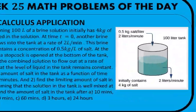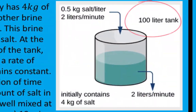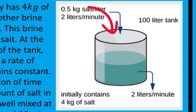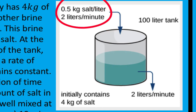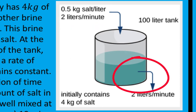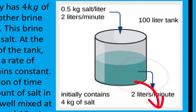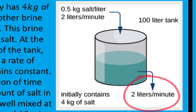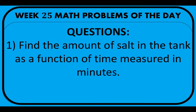Here is our problem for today. A tank containing 100 liters of a brine solution initially has 4 kilograms of salt dissolved in the solution. At time equals zero, another brine solution flows into the tank at the rate of 2 liters per minute. The brine solution contains a concentration of 0.5 kilograms per liter of salt. At the same time, a stopcock is opened at the bottom of the tank, allowing the combined solution to flow at a rate of 2 liters per minute so that the level of liquid in the tank remains constant. Number one: find the amount of salt in the tank as a function of time measured in minutes.